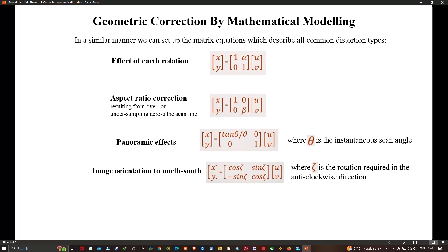Using the set of equations which can describe all common types of distortion, for example the effect of earth's rotation is described using this matrix equation, and similarly the aspect ratio correction resulting from over or under sampling across the scan line can be represented in this matrix equation.